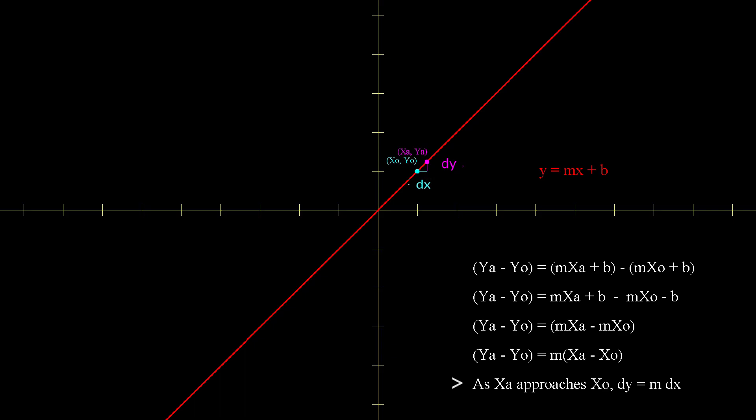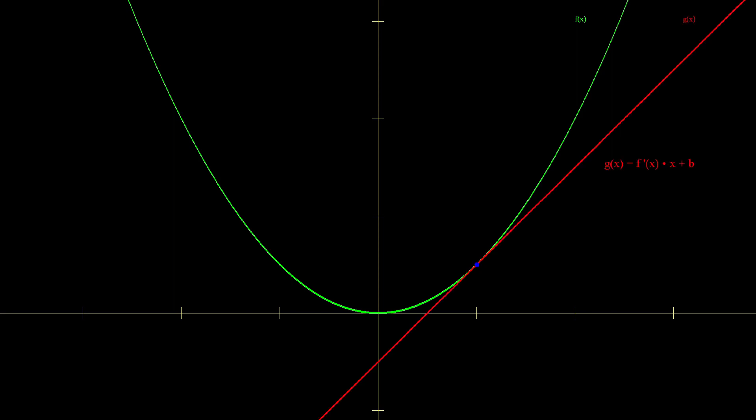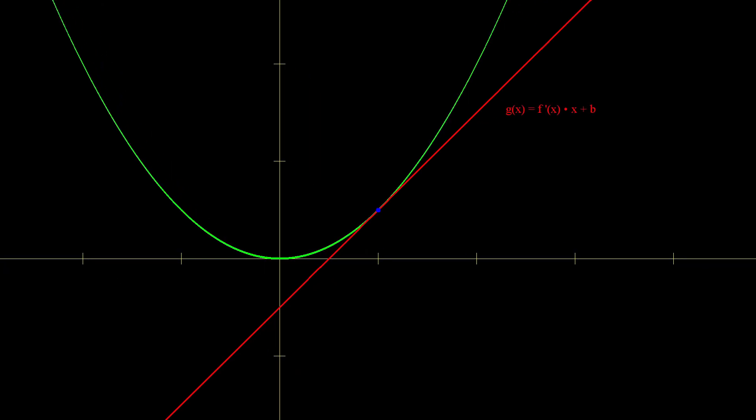Now we can look at the graph of f. G is a line tangent to f. It equals f prime times x plus b. The slope of the tangent line is f prime, that is the derivative of f. And this makes sense. The derivative of a function is defined as the slope of its tangent line at a point.